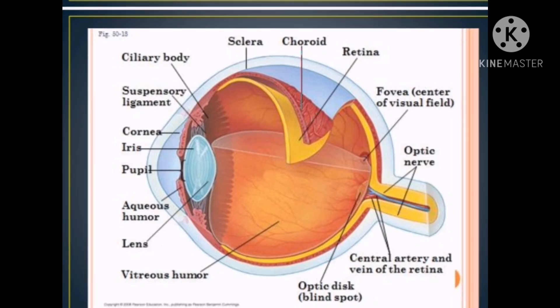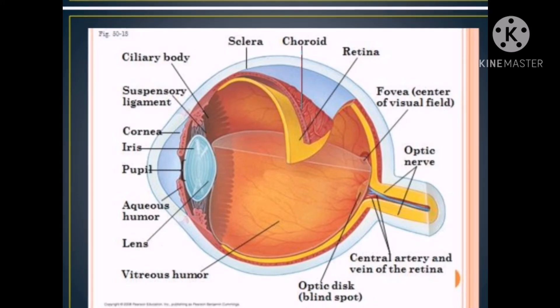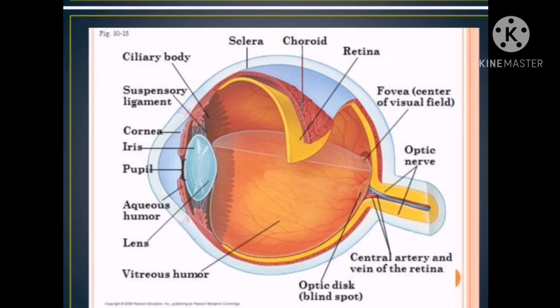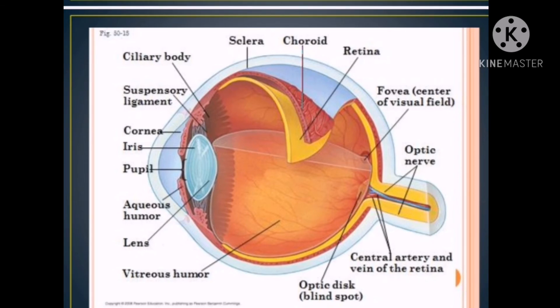The cornea is the transparent layer which helps to bend incoming light and helps to focus. The iris is the green, blue, or brown part of the eye. Small muscles contract or relax to make the pupil bigger or smaller. The pupil is the black part in the center of the eye, which is actually a hole. Light enters the eye through the pupil. The lens focuses light on the retina at the back of the eye. The retina contains millions of photoreceptors. Photoreceptors are sensors that convert light into electrical impulses which are then sent to the brain via the nerve.